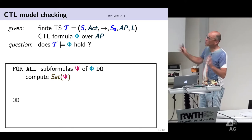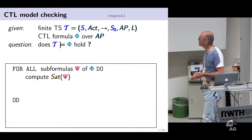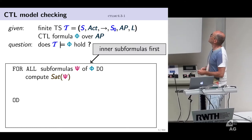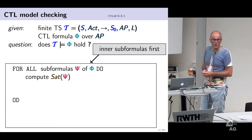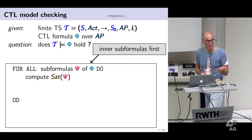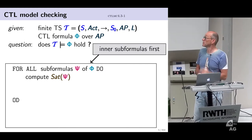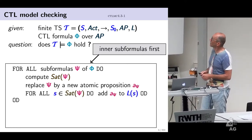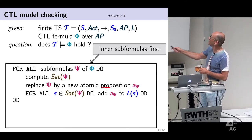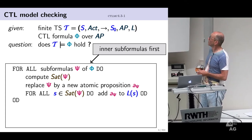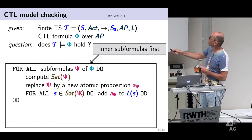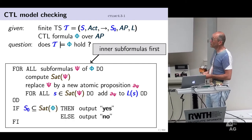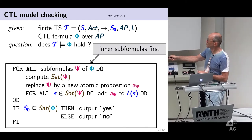The idea is to compute recursively the set of states satisfying a formula. We decompose by looking at the parse tree of the formula phi and the subformulas. We compute the set of states satisfying each subformula from inside out. We replace each subformula with a new atomic proposition and extend the labeling of each satisfying state. Finally, if all initial states satisfy phi, the output is yes; otherwise no.